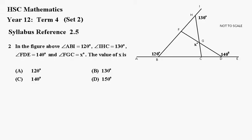Number 2. In the figure above, angle ABI is equal to 120 degrees, angle IHC is 130 degrees, angle FDE is 140 degrees, and angle FGC is X degrees. The value of X is A, B, C or D.